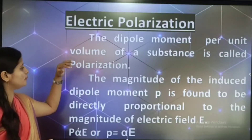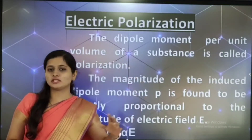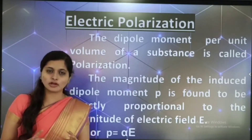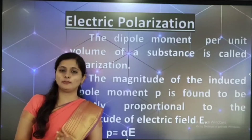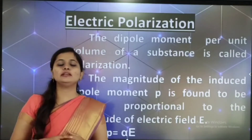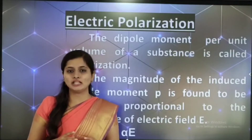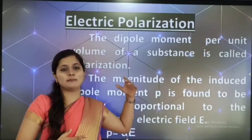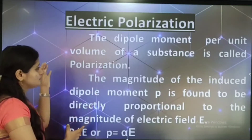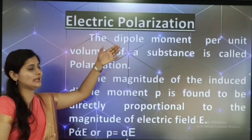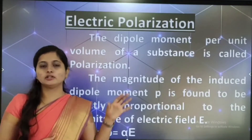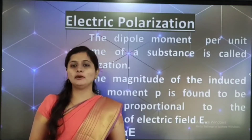The dipole moment per unit volume of a substance is called electric polarization. Electric polarization is nothing but dipole moment per unit volume. The dipole moment is nothing but the separation of two opposite charges. So by the separation of opposite charges, we get a net dipole moment per unit volume, and that we can call as electric polarization.